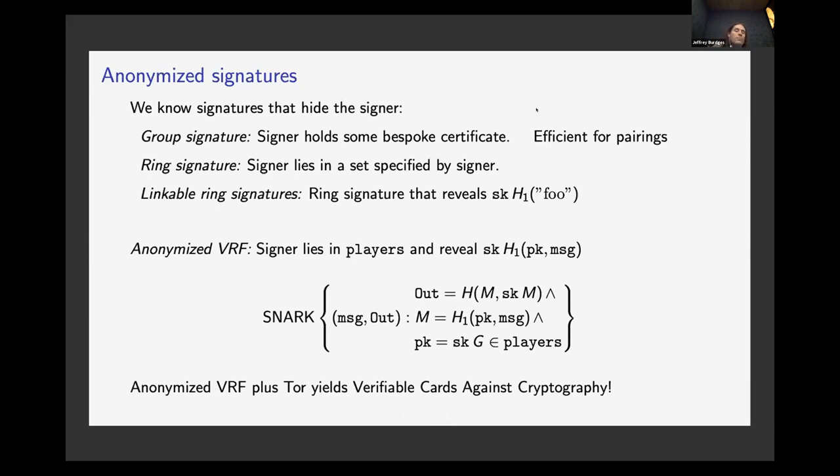So if I'm making most kinds of linkable ring signatures, just give me a linkable group signature, whatever, give me an anonymized VRF. And that means that the signer essentially proves they're in the set of players and they reveal the secret key times the word, whatever the message hashed to the curve. You can implement these in a snark directly. Basically this particular snark you can implement in less than 4,000 constraints. I think we have it below 3,000 and you can do a lot of optimizations that make it even more efficient than that. So this is, while it's a lot heavier than a group signature, it's not really that bad. And the verifier is checking a few pairings.